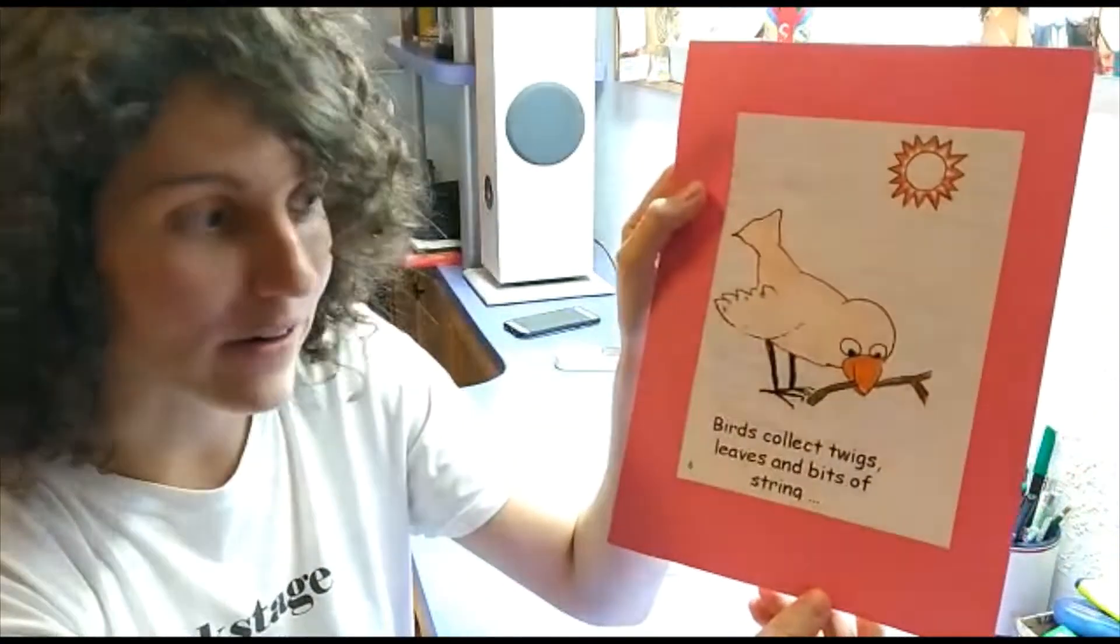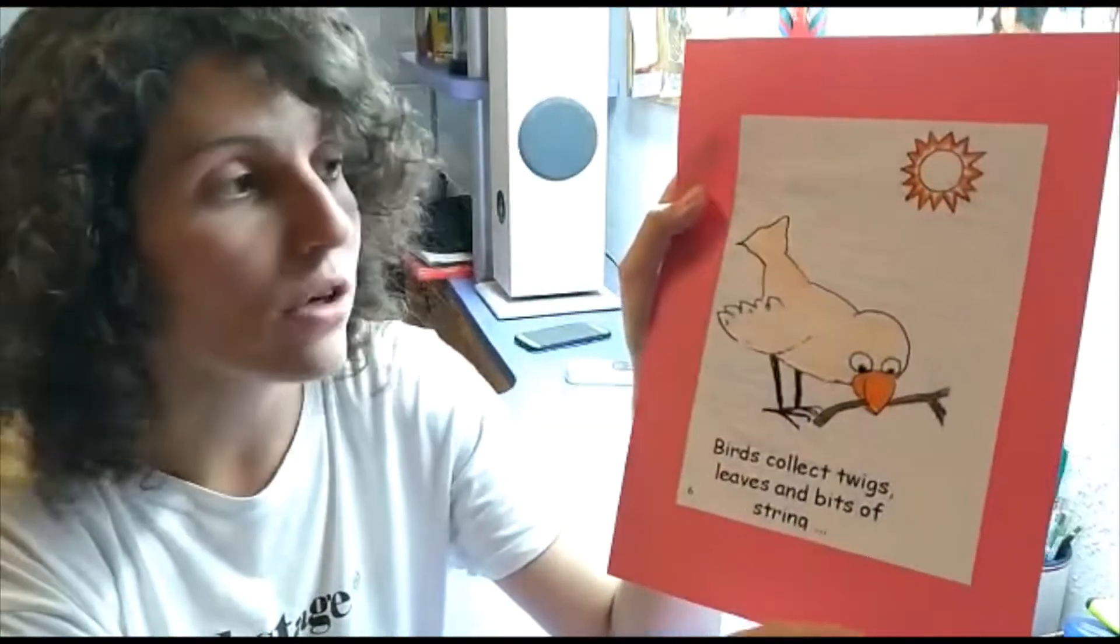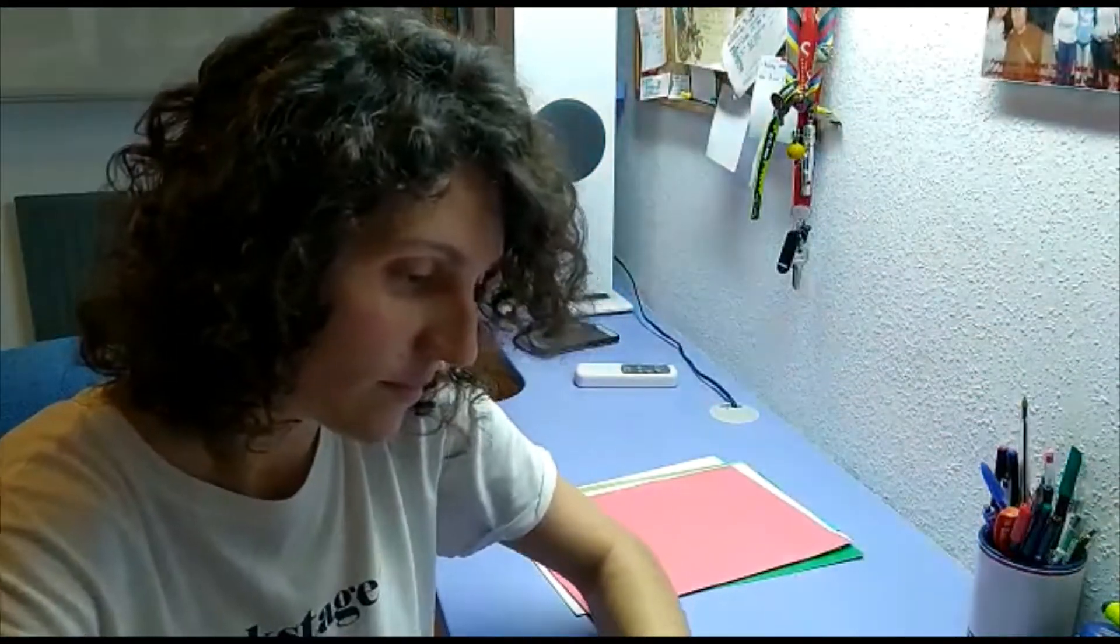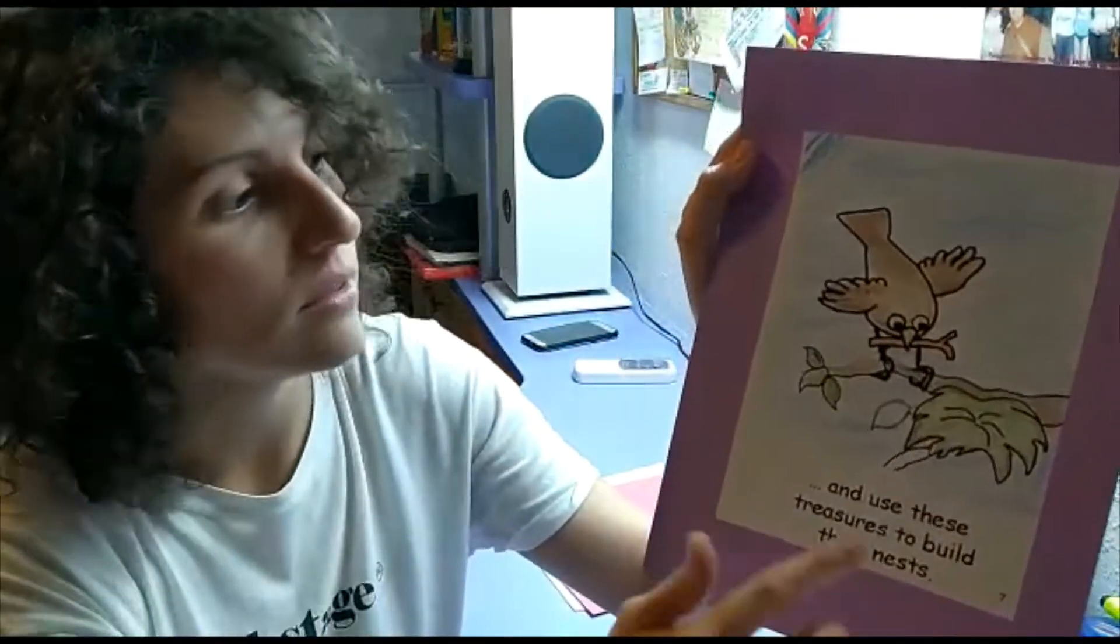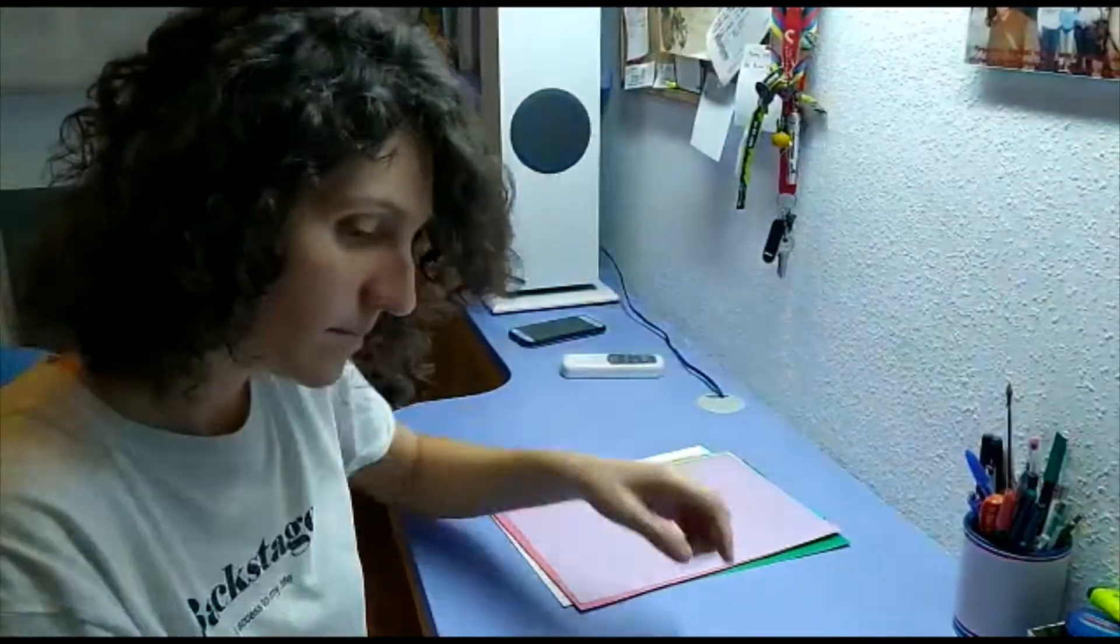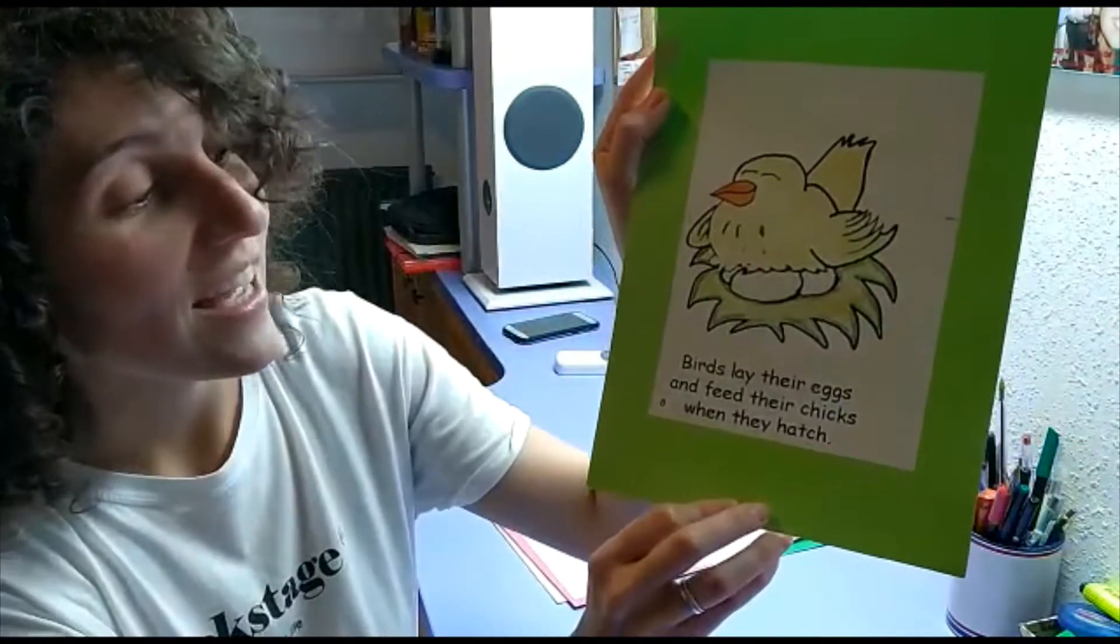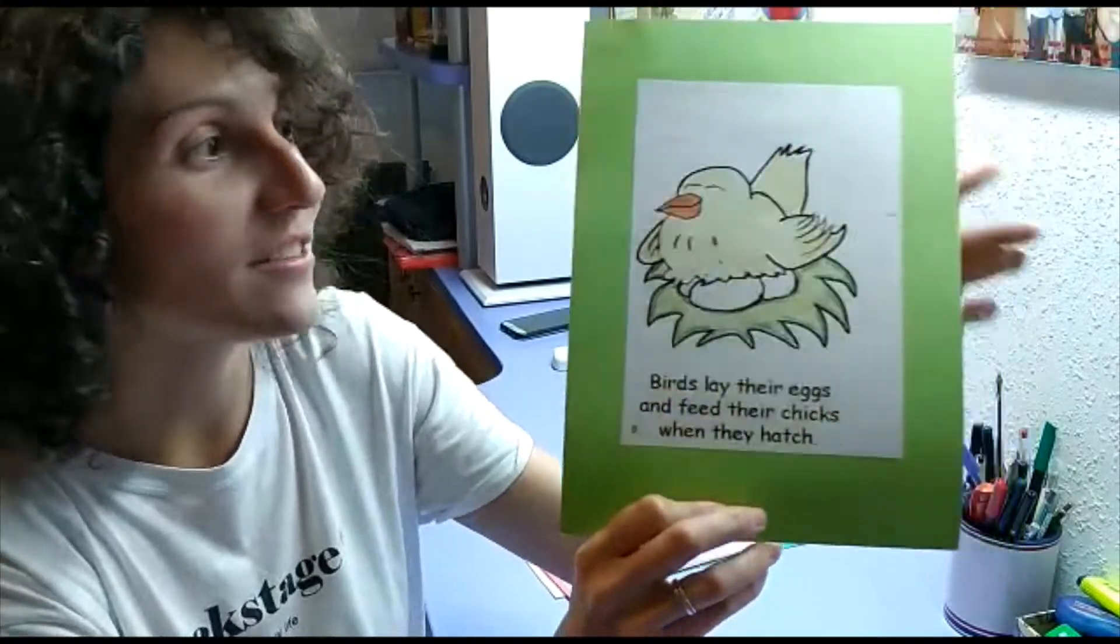And the birds collect twigs, leaves and bits of string. They use these treasures to build their little nests. And they lay their eggs and feed their chicks when they hatch. What a happy bird!